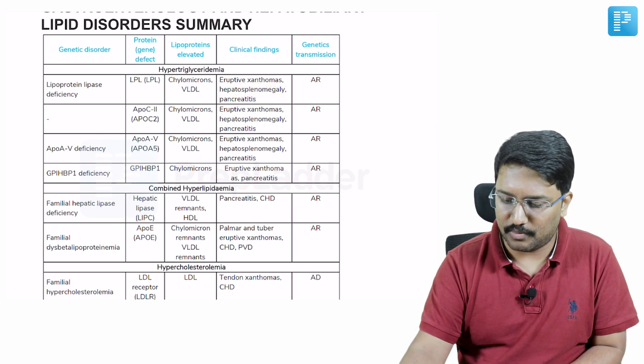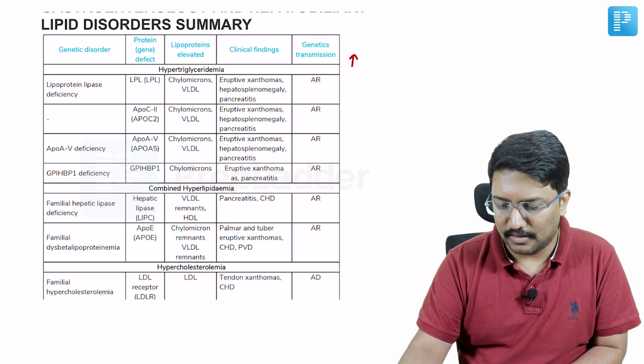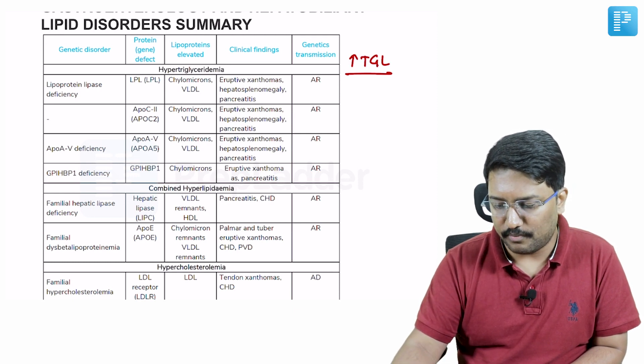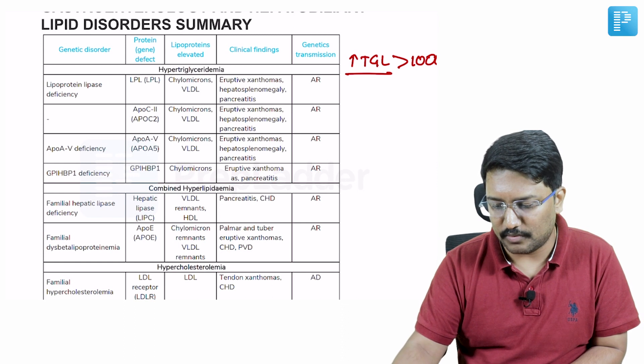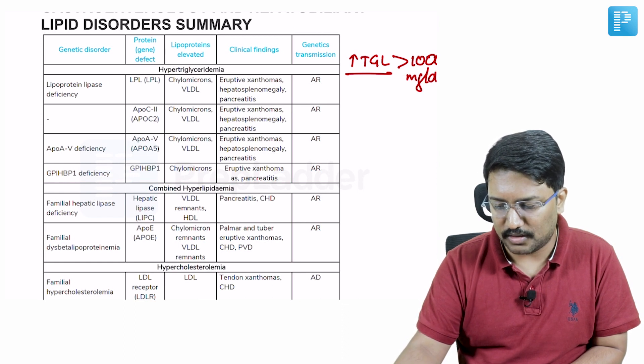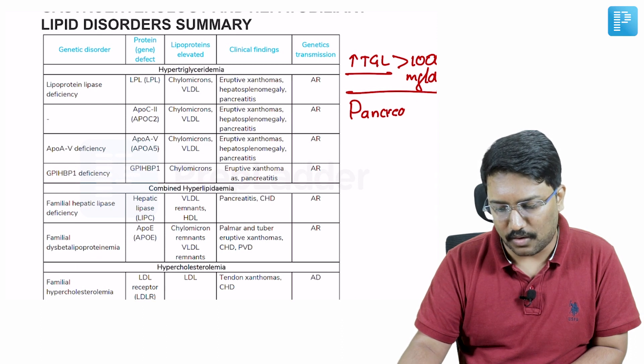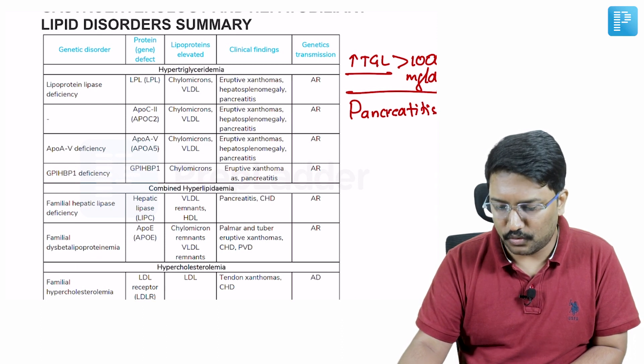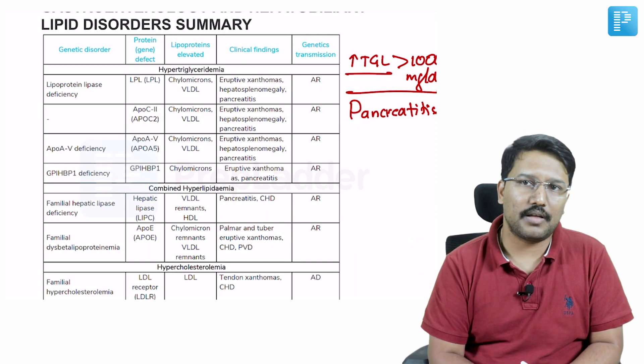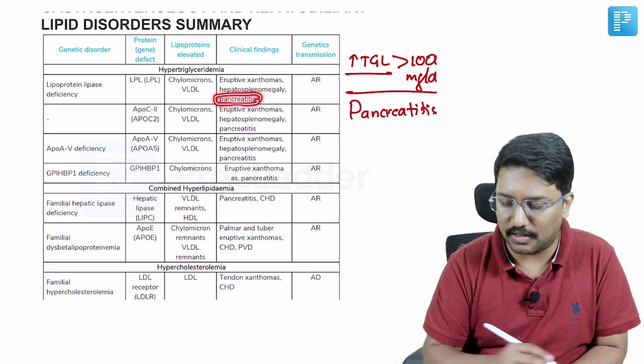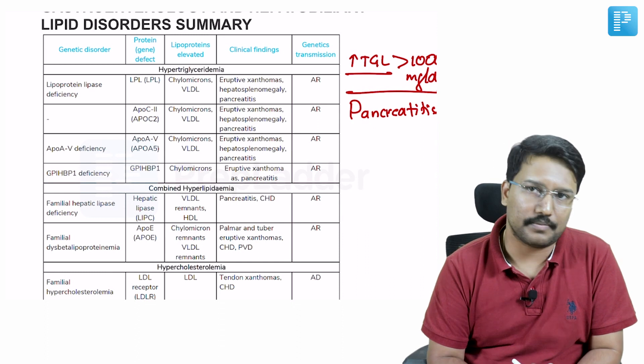Because we are talking about hypertriglyceridemia, increased TGLs, particularly more than 1000 milligrams per deciliter, is associated with significantly elevated risk of acute pancreatitis, which we are already familiar with. The moment you go through this treasure, that memory gets recollected.